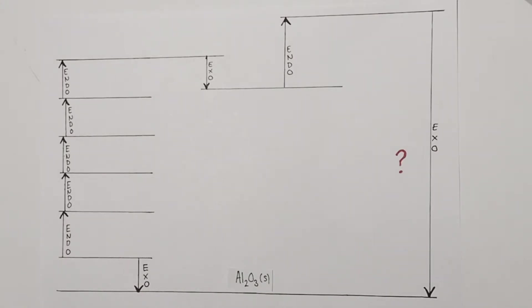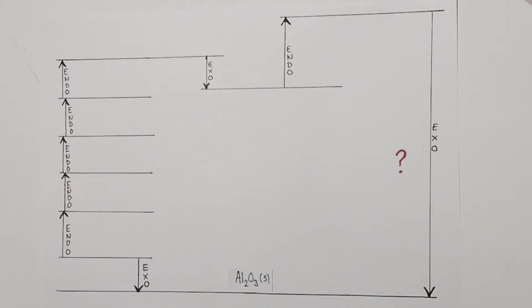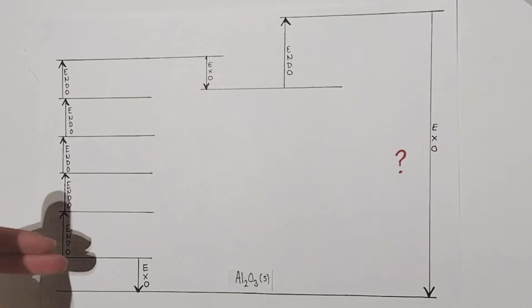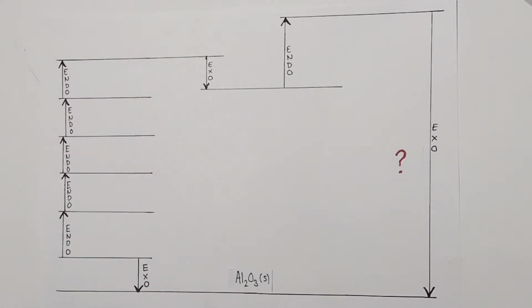Just before we crack on, if you're looking for some of those older videos looking at other Born-Haber Cycles, please check out the card appearing now for an earlier video to give you some background. Our first step is to build this thermochemical cycle, and how we're going to do that is place equations on each of these lines to represent the enthalpy changes taking place.